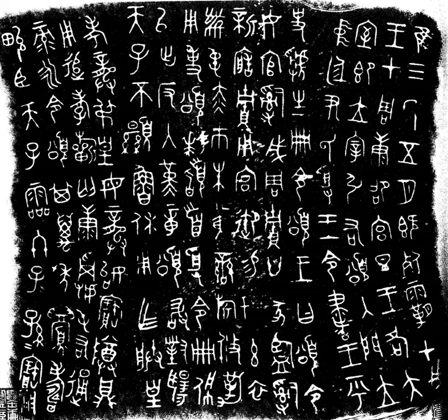In the Han Dynasty, when clerical script became the popular form of writing and Seal Script was relegated to more formal usage such as on signet seals and for the titles of stelae — inscribed stone memorial tablets which were popular at the time — the people began to refer to the earlier Qin Dynasty script as seal script due to the continued use on signet seals, or name chops. At that time, there was still knowledge of even older, often more complex graphs dating to the middle to late Zhou Dynasty, directly ancestral to the Qin forms, which differed from the Qin seal script forms but resembled them in their rounded, seal script-like style, as opposed to the squared, rectilinear clerical script style.